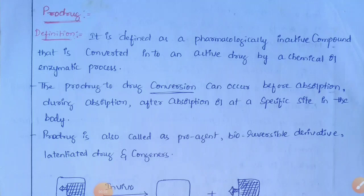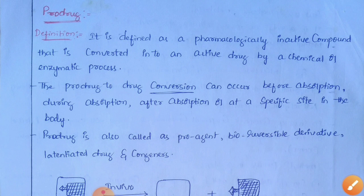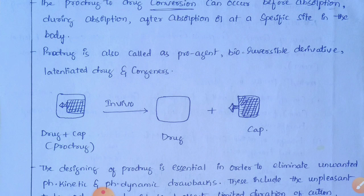In this video we are going to discuss about the topic prodrug. Prodrug can be defined as a pharmacologically inactive compound that is converted into an active compound by a chemical or enzymatic process. Initially, prodrug is inactive in nature. When it enters into the body, it can be converted into active form. The prodrug-to-drug conversion can occur before absorption, during absorption, or after absorption at specific sites in the body. Prodrug can also be called as pro-agent, bio-reversible derivative, latentiated drug, and congeners.